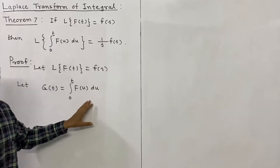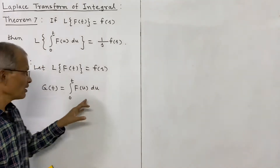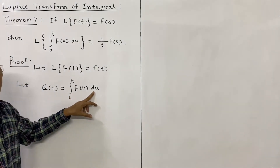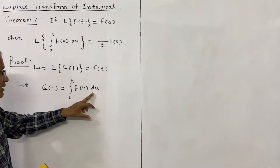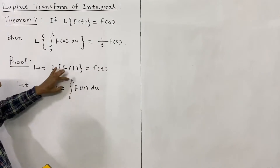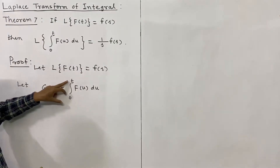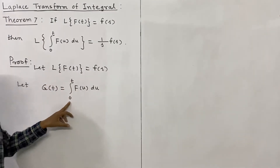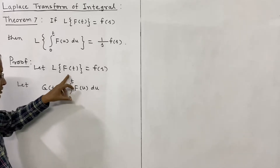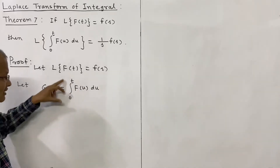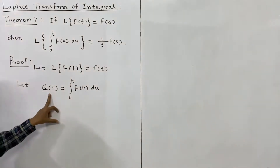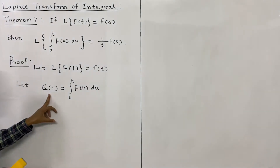This is a function of t because it is integrated with respect to u, and then the limits are put as upper limit t and lower limit 0. The lower limit is a constant but upper limit is t, so therefore this finally becomes a function of t, which we have denoted by g(t).